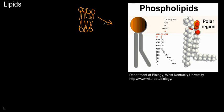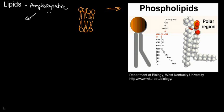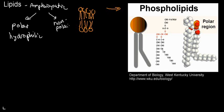These membrane lipids are phospholipids, and we're going to study them at length in chemistry. What's important to understand about phospholipids is that they are amphipathic — meaning they have two domains. One is polar or hydrophilic, and the other is nonpolar or hydrophobic.